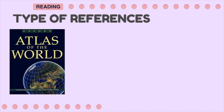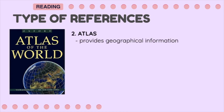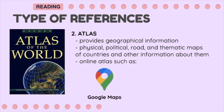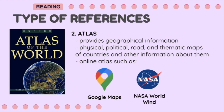The second type of general reference is the Atlas. It provides geographical information such as physical, political, road, and thematic maps of countries and other information about them. We can also use online apps such as Google Maps, launched in 2005, NASA World Wind in 2003, and Wikimapia in 2006.